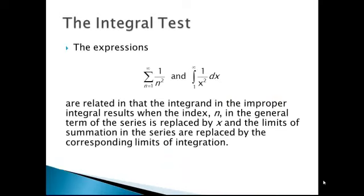Consider the integral test. Look at two expressions: the summation from n equals 1 to infinity of 1 over n squared, and the integral from 1 to infinity of 1 over x squared. In the summation you have 1 over n squared, but in the integral you have 1 over x squared — the n has been replaced with x. The limits also correspond: both go from 1 to infinity. The relationship between these two expressions will be important in our next theorem.